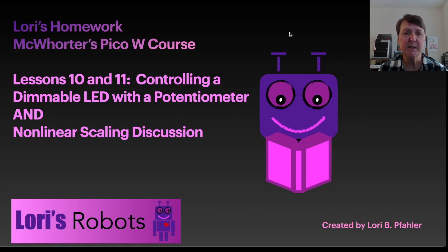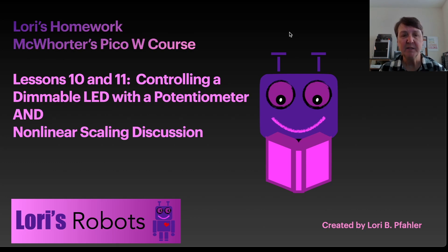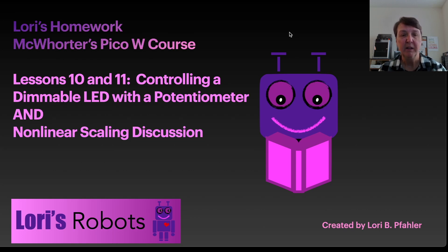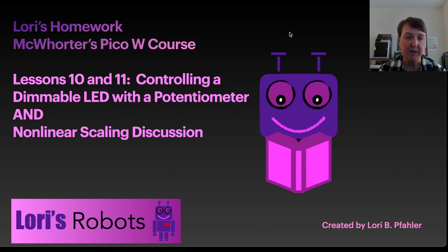Hi, this is Lori and this is my homework for Paul McCorder's PicoW course lessons 10 and 11. In these two lessons we're learning how to control an LED with the potentiometer as the input device to determine how bright to make the LED shine. As we turn the potentiometer from left to right we increase the brightness, and turning it the other way the brightness goes all the way down to off.